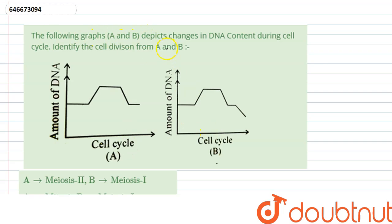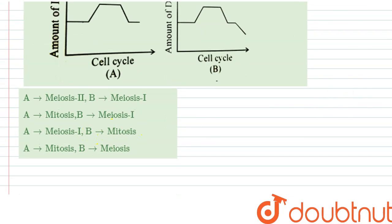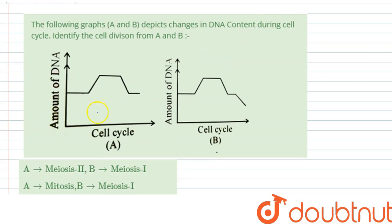Identify the cell division from graph A and B, and these are our options. Now let's examine this graph. So amount of DNA, it was stable and then it increased to an amount and decreased the equal amount and then again it became stable.